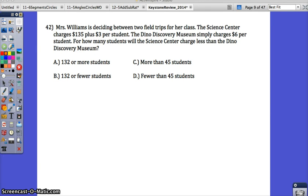Okay, let's start with 42. Mrs. Williams is deciding between two field trips for her class. The Science Center charges $135 plus $3 per student. The Dino Discovery Museum simply charges $6 per student. So there's no fee that stands alone on that one. For how many students will the Science Center charge less than the Dino Discovery Museum?